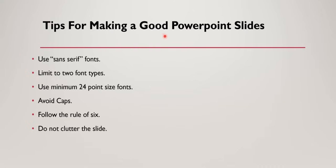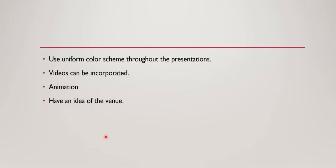Now, what are the tips for making a good PowerPoint presentation? We have to use sans-serif fonts, limit to two font types, use minimum 24-point size fonts, avoid all caps, follow the rule of six, and do not clutter the slide. We have to use a uniform color scheme throughout the presentation and can use videos as well as animation. We should also have an idea of the venue.